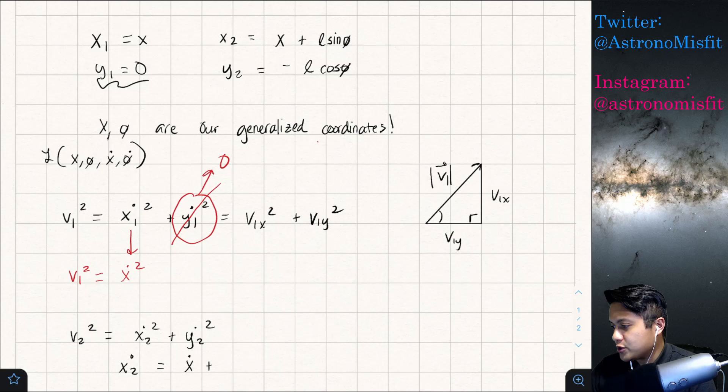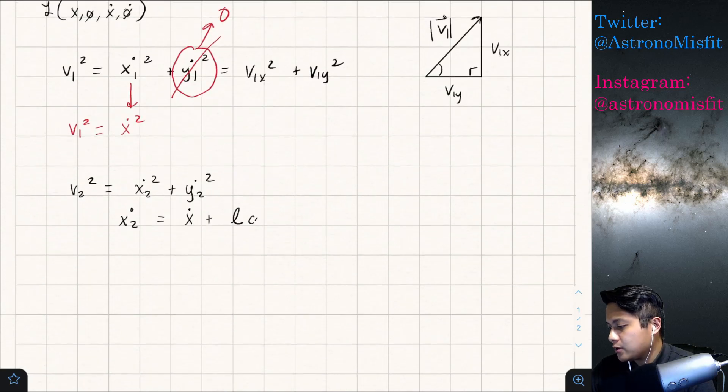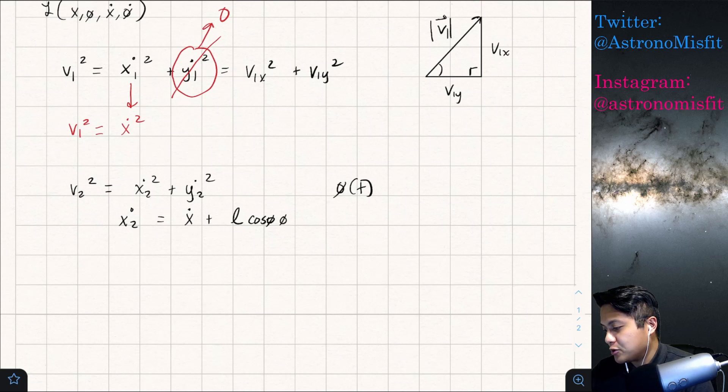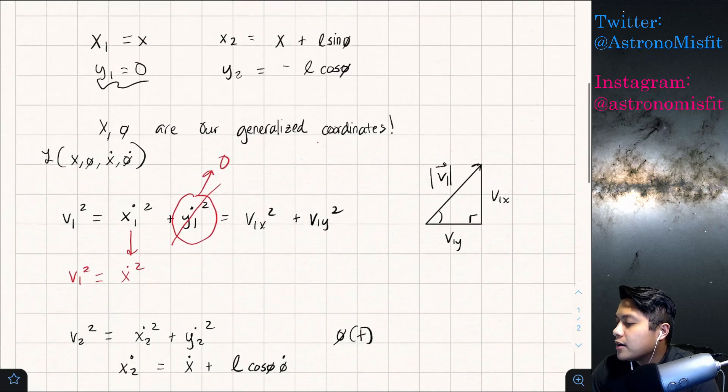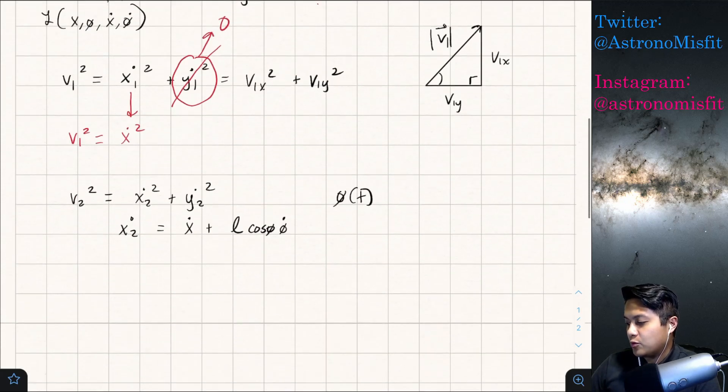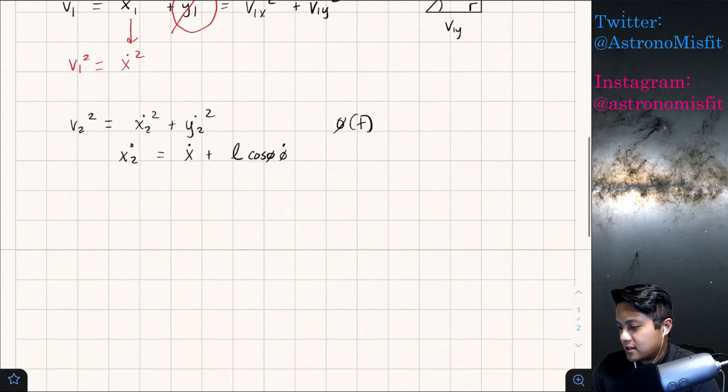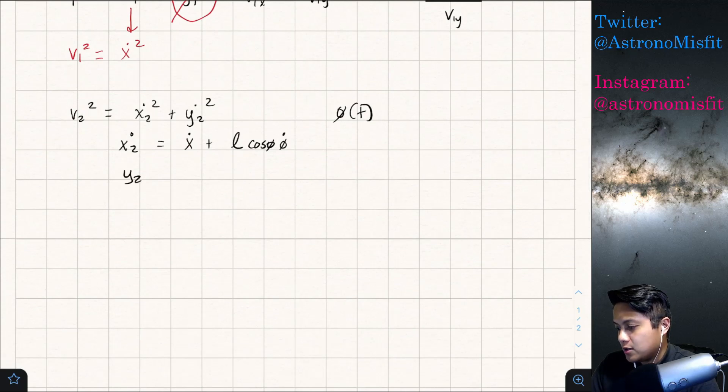And so we have to apply the chain rule and multiply it by the derivative of phi with respect to time. So we get phi dot. So that's what x2 dot is. We just took the derivative of this term up here. Because of the chain rule, we spit out a phi dot. And now we have to get y dot, or y2 dot. y2 dot, which is, again, what's y2? y2 is just negative l cosine phi.